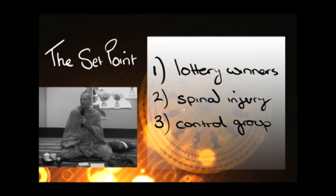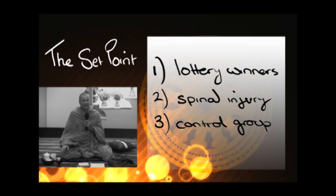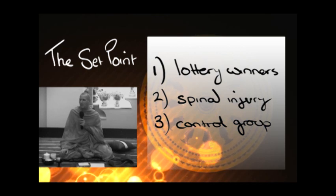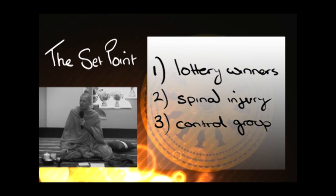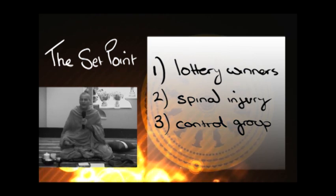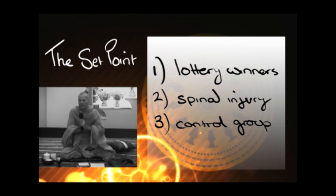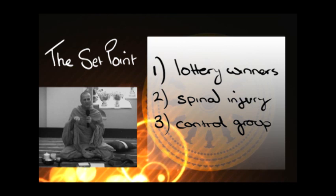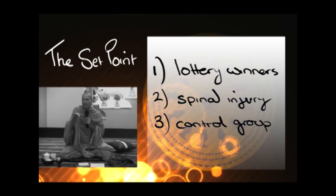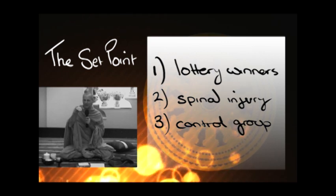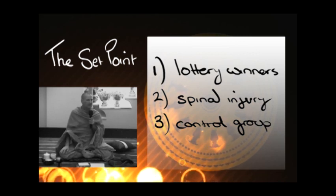Now, you would assume that the lottery winners were happier, right? Not really. It turns out that pretty much it doesn't matter what happens to you. Of course for a week or two you are going to be very happy, the same as if you had the accident or some kind of injury. For a short while you are going to be unhappy, but very quickly you return to a certain level, a certain what they call a set point. This seems to be your level of happiness. You will have good days and bad days, but you are pretty much going to average out at this particular level.